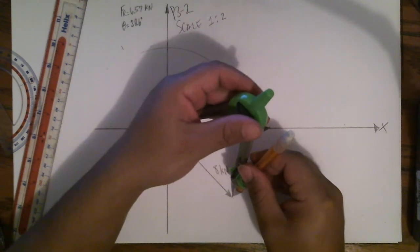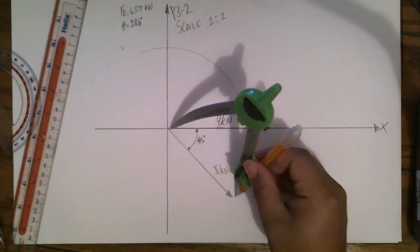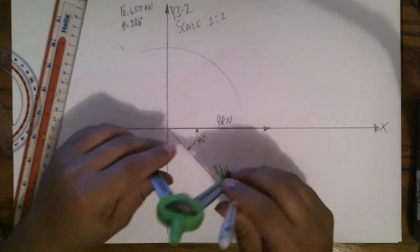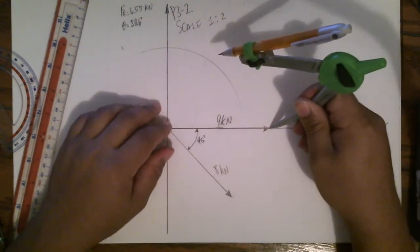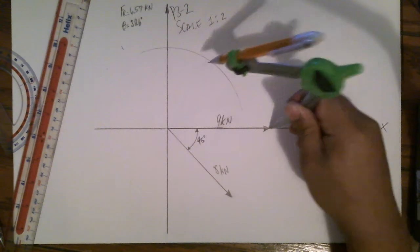Right there. Place the protractor at the tip of the 9 kilonewton vector, right here, and draw a circle.